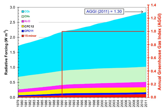Similar issues apply to other greenhouse gases, many of which have longer mean lifetimes than CO2. For example, N2O has a mean atmospheric lifetime of 121 years.